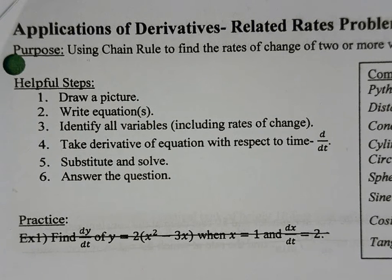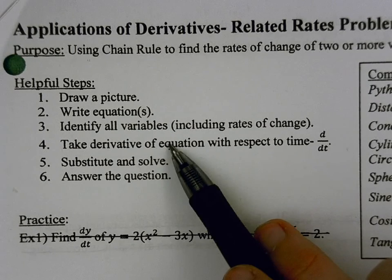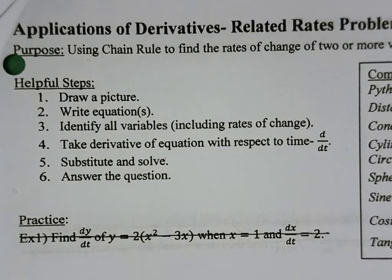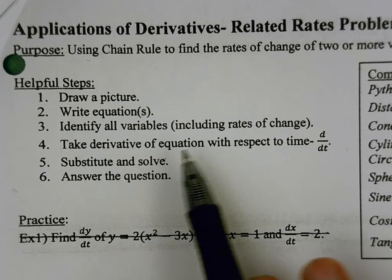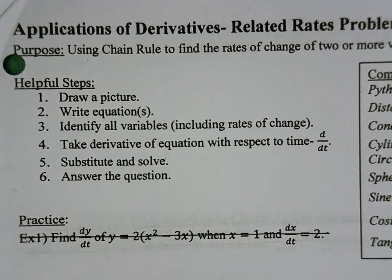The first example problem we're going to look at deals with step four and step five — the ones that I consider the more procedural aspect of these problems. Step four is taking the derivative of the equation with respect to time.